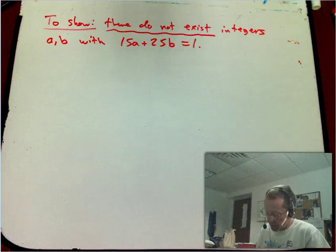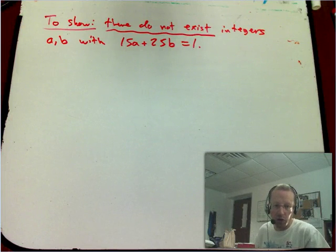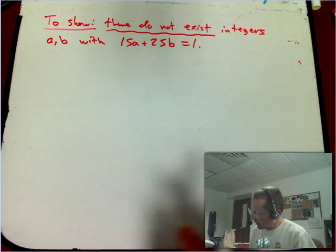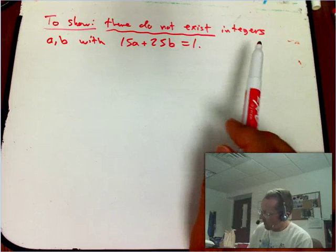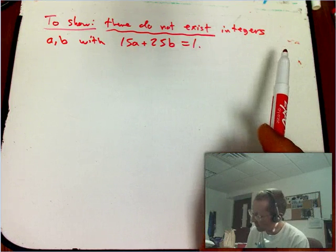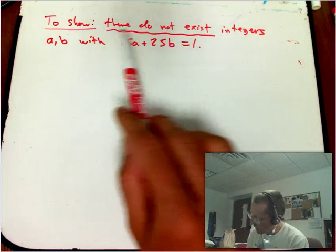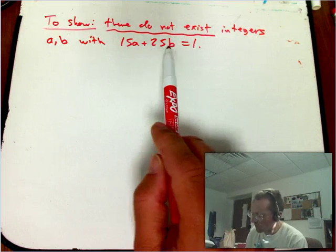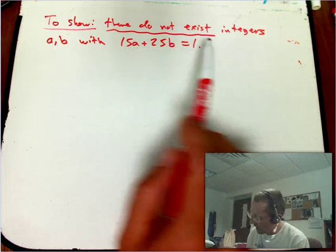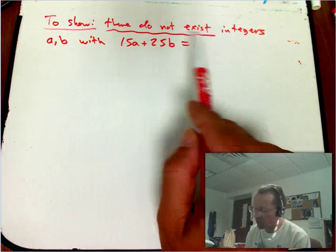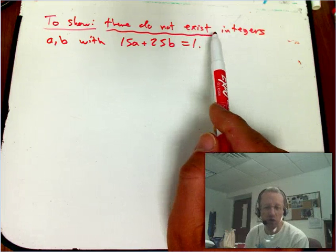This is the first of a number of short videos I want to make focusing on proof by contradiction. We're going to start with a pretty classic example of something where proof by contradiction is highly indicated. What we want to show is there do not exist integers a and b that solve the equation 15a plus 25b equals 1. I've underlined 'there do not exist' because that's a really big clue that proof by contradiction is a good idea.